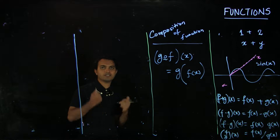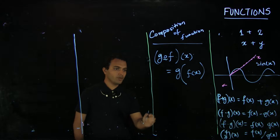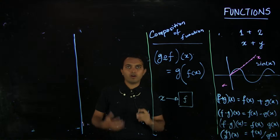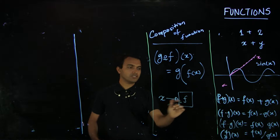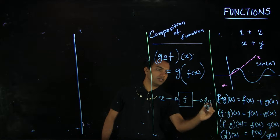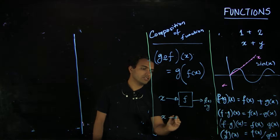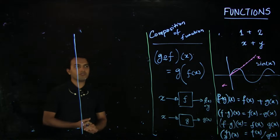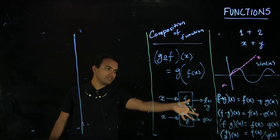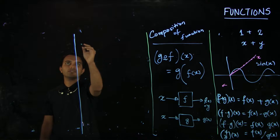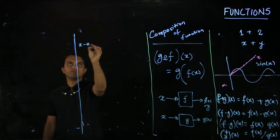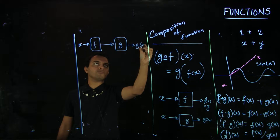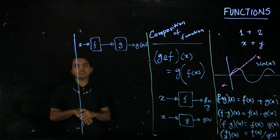To better visualize what composition means, it's a good idea to use the input-output interpretation of a function. We can think of a function as: x is an input, the function is an operator or system through which x goes in, and we get some output y or f of x. Similarly you can do this with g and get output g of x. But in composition of functions, what we are actually doing is chaining these two input-output boxes together. You take input x, pass it through f, then pass what you get through g, and the resulting output is g of f of x.